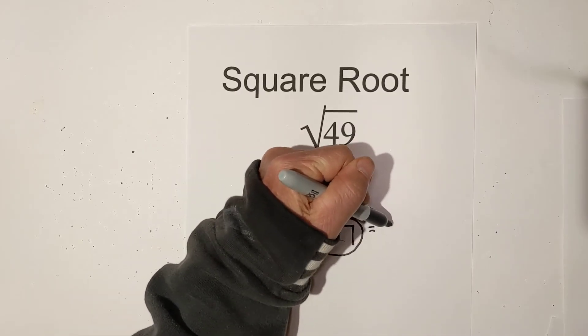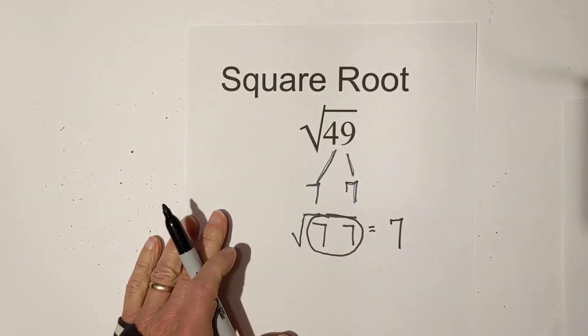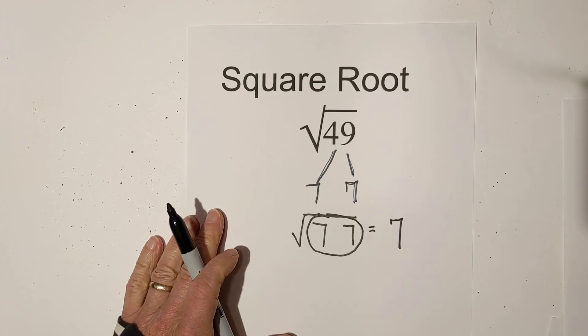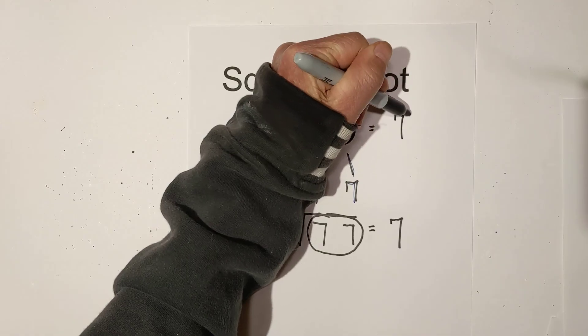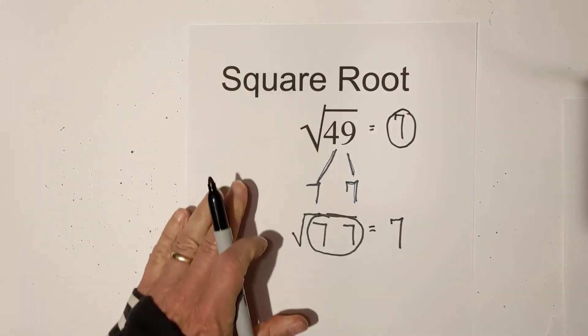But when you take out a pair of 7s, you only take one out, and that would be 7. So you end up the square root of 49 equals 7.